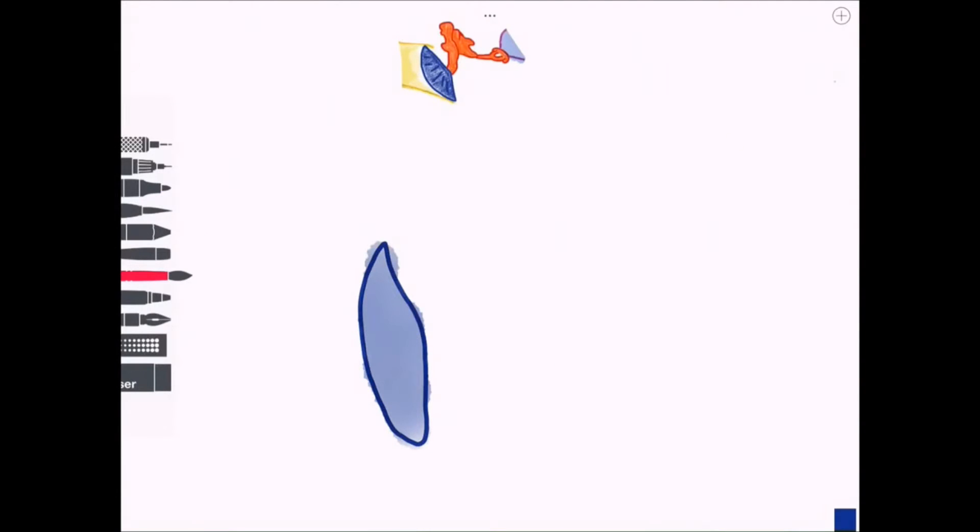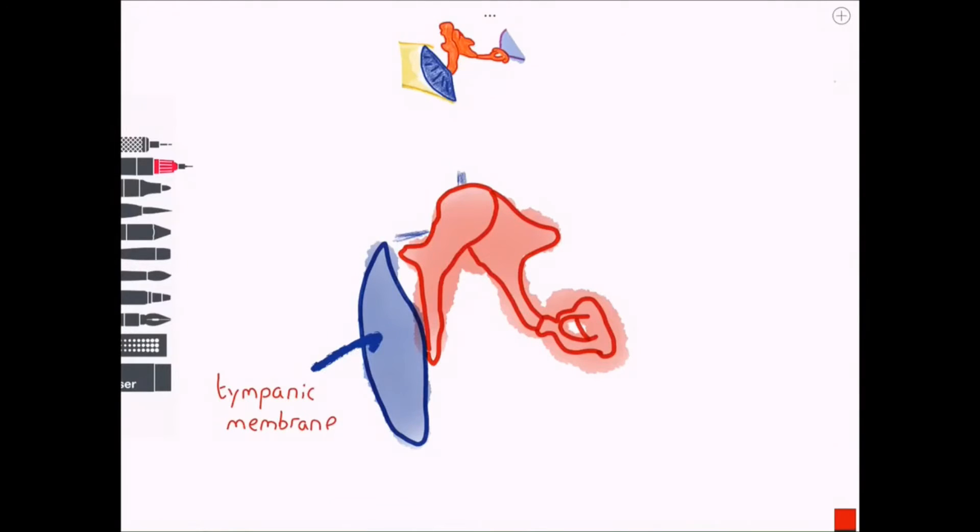Let's move on to the middle ear which lies on the internal side of the tympanic membrane. Above you can see a small diagram of the middle ear which I'm magnifying below. The tympanic membrane is in blue and in red I'm drawing the tiny bones or ossicles of the middle ear.